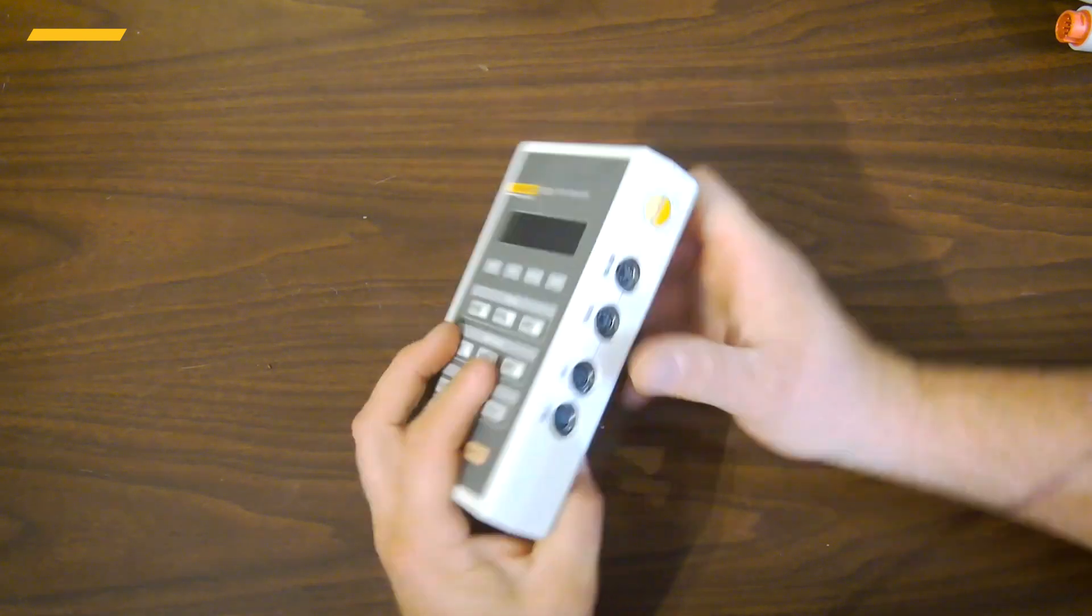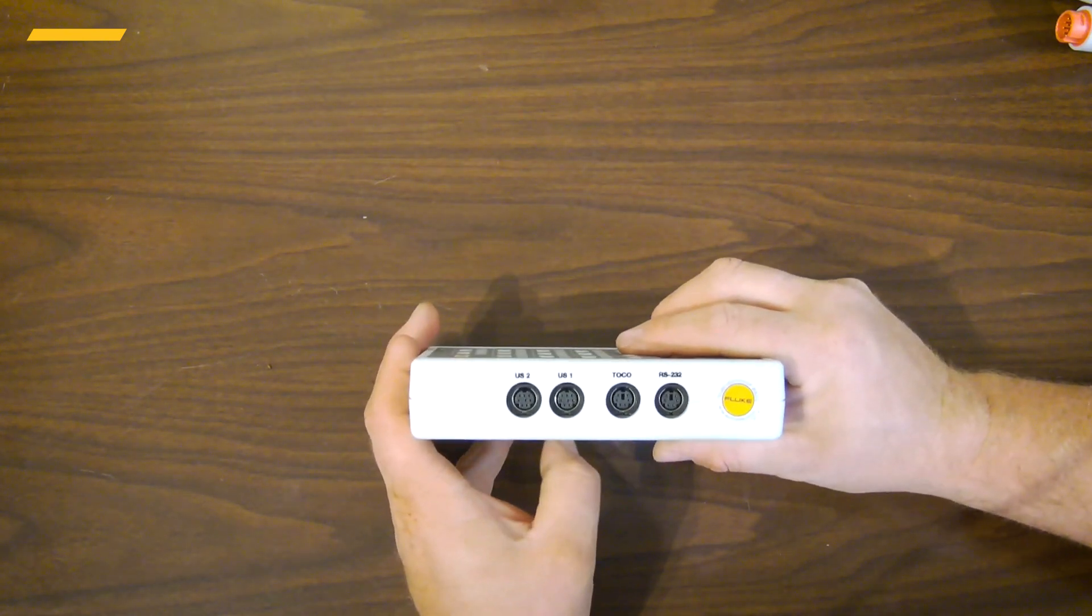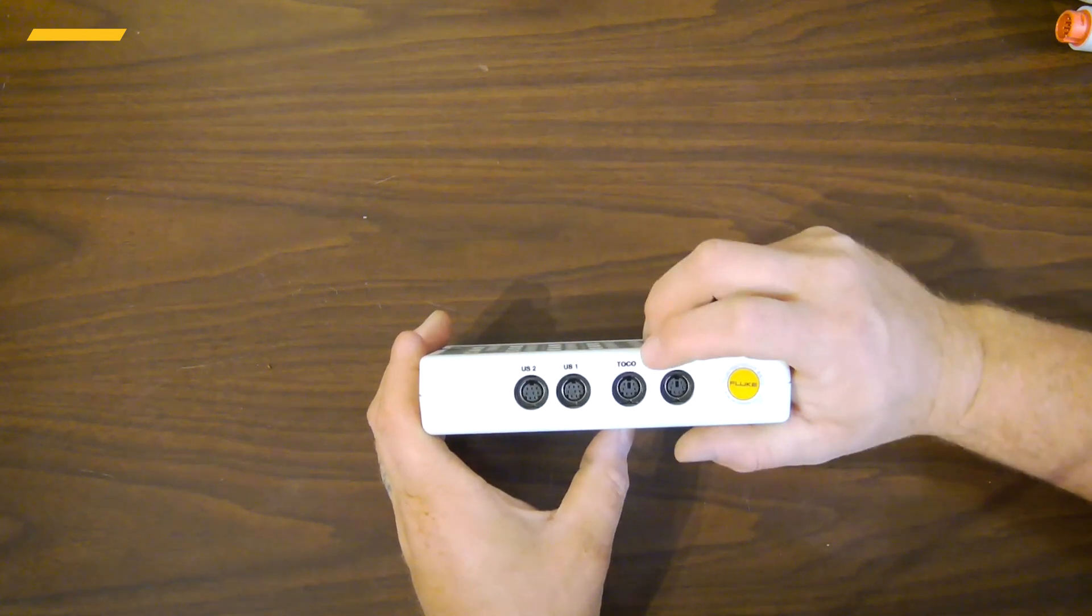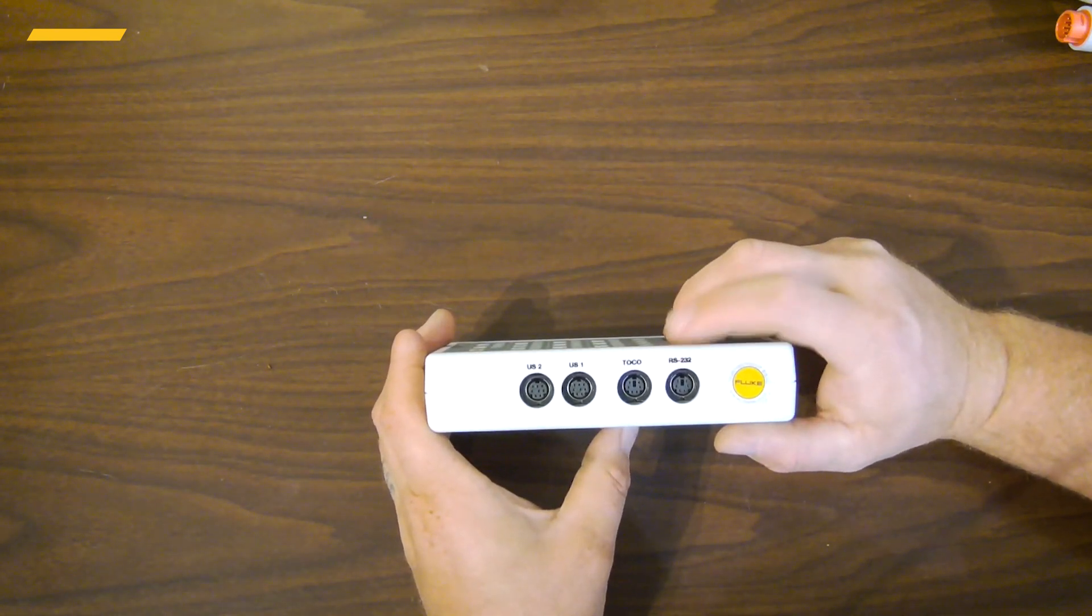And then if we look at the other side you're going to notice another series of ports. On this side we're going to have US 1, 2, TOCO and a communications port, the RS-232.